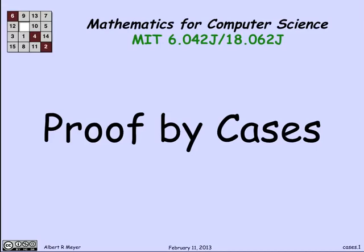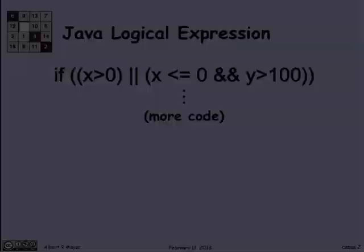Another basic proof technique is called proof by cases, in which we prove something by breaking it up into pieces that are easy to prove, but that together cover all possibilities. Let's look at an explicit, simple example from computer science.